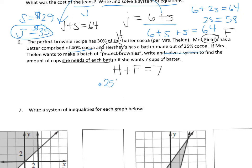So .25H plus Mrs. Fields is 40% cocoa equals how much cocoa do I have in 7 cups of batter? Well I want, or how much do I want? I want 30% of it to be cocoa. So I'm going to take .3 and multiply it by 7. So now you're solving this system of equation. And you can either do it by substitution or elimination.